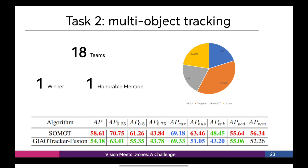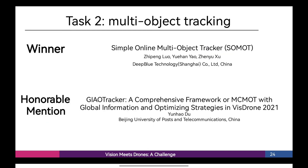Task 2: Multi-Object Tracking. This task is very challenging. There are 18 teams competing in the task. Among them, the winner of Task 2 is from Deep Blue Technology, Shanghai, China. We also have a wonderful honorable mention. The title is GIAO Tracker: A Comprehensive Framework for MCMOT with Global Information and Optimizing Strategies, in 2021. The team member is Yunhao Du, from Beijing University of Post and Telecommunications, China.